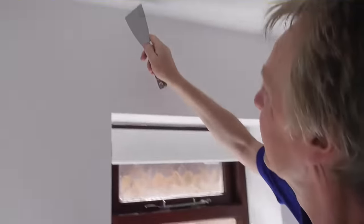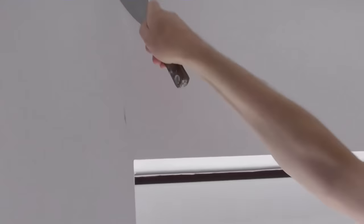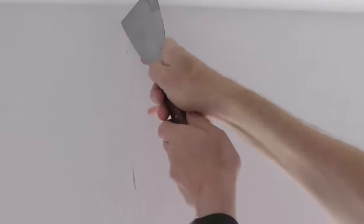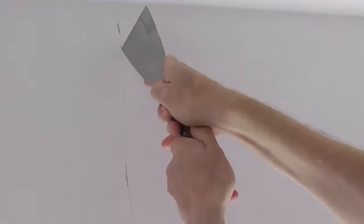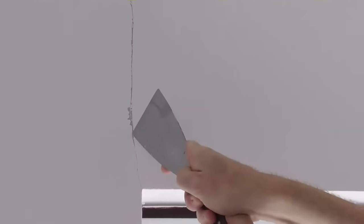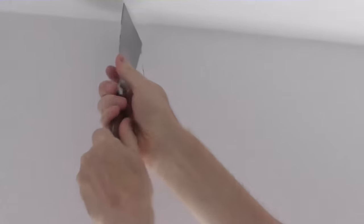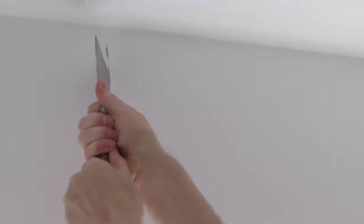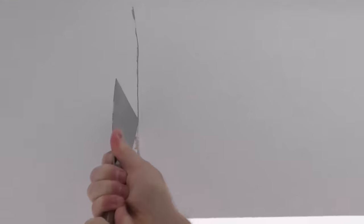Okay so to repair this hairline crack I'm going to first of all be using this scraper to cut out the crack in a process we call undercutting. So what I'm going to do is put the scraper on the crack at an angle and pull it down through the crack to open it out. I'm tilting it to the right to start off with. Now I'm going to tilt it to the left and do the same thing pulling it down through the crack like that.